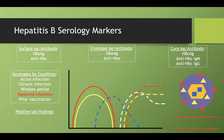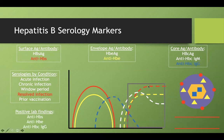In a resolved infection, all antigens have gone and only antibodies remain — anti-HBs, anti-HBe, and anti-HBc IgG. The IgM to the core had come and gone. To distinguish a resolved infection from prior vaccination: vaccination only produces anti-HBs, whereas a true resolved infection shows all three antibodies including anti-HBc IgG.